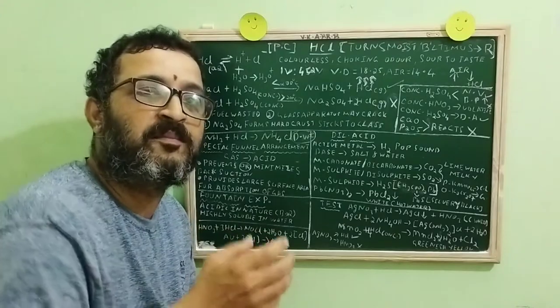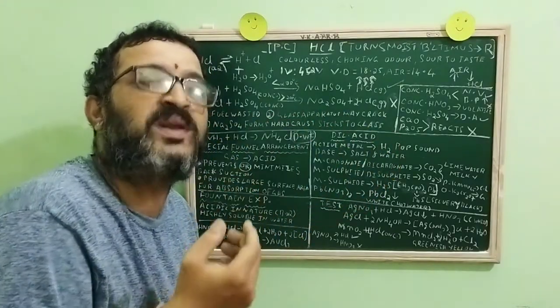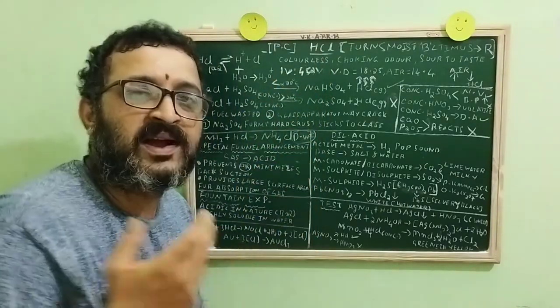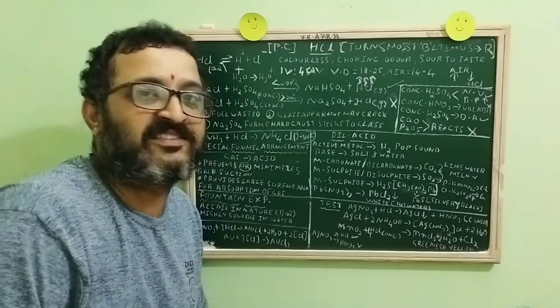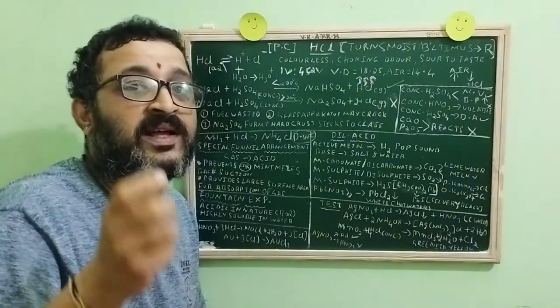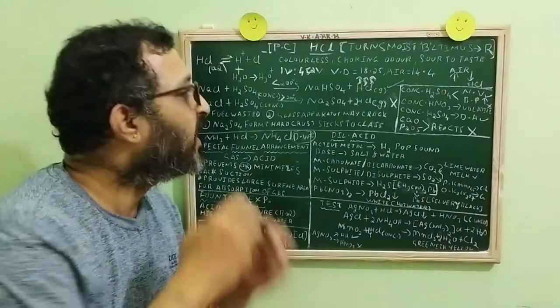Children, what is the type of bond present between H and Cl? Definitely, Cl is more electronegative when compared to H. It is polar covalent bond. Now, color, colorless, HCl is colorless. Odor, it has a choking odor. And taste, all acids are sour to taste.